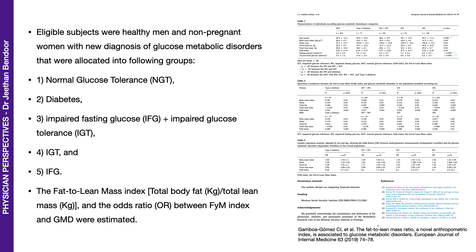Eligible subjects in this study were healthy men and non-pregnant women with a new diagnosis of glucose metabolic disorders, allocated into the following five groups: one, normal glucose tolerance; two, diabetes; three, impaired fasting glucose plus impaired glucose tolerance; four, impaired glucose tolerance; and five, impaired fasting glucose.